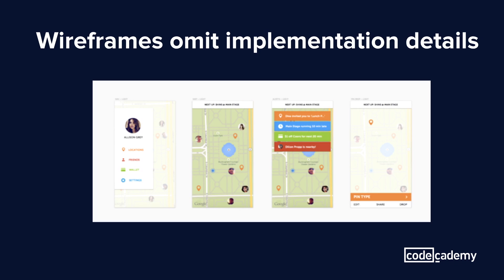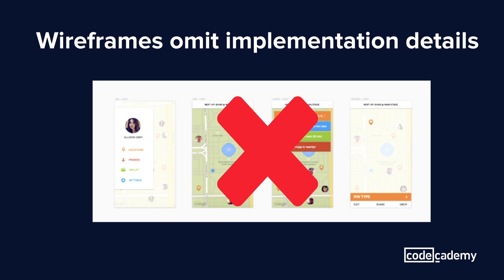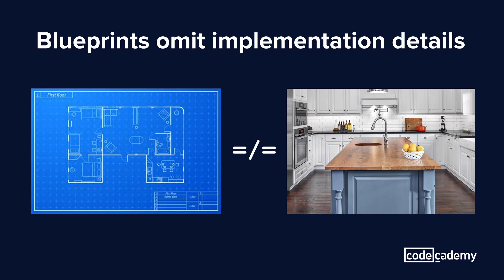A common misconception is that you have a lot of aesthetic details in a wireframe, but one key part about them is that they emphasize usability. This means you won't really see things like colors, specific fonts, or any of the bells and whistles that you see in this picture here. This is so that you can focus on the structure of the design. Similarly, blueprints also don't specify implementation details like the type of material the counters will be made of or the color the walls will be painted.